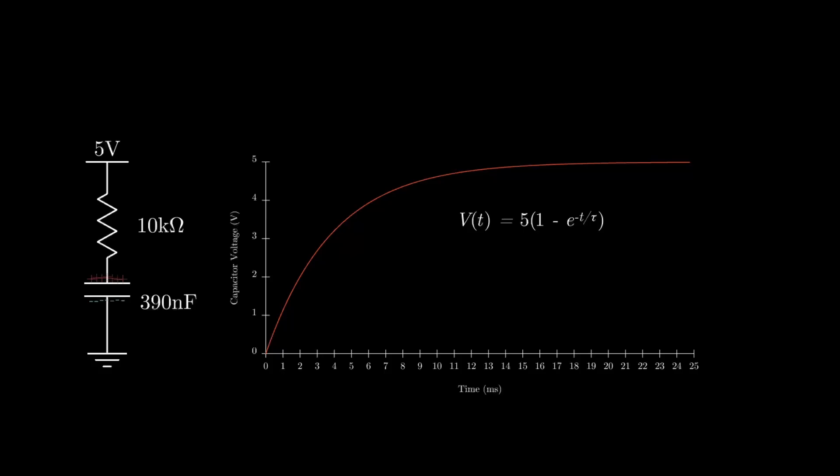Tau here is the time constant of the circuit and it's dependent on the values of the resistor and capacitor. If we increase the resistor or capacitor values the time constant will increase and the capacitor will take longer to charge up. If we decrease the resistor or capacitor values the time constant will decrease and the capacitor will charge up faster. This is how we will control the period of our clock.